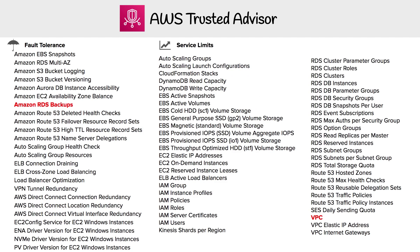Looking at the last two categories: fault tolerance and service limits. For fault tolerance, it would recommend something like RDS backups — just to make sure that you have backups in place so that if your database goes down, you can recover it. For service limits, there are limitations on the certain amount of resources you can use, but AWS allows you to increase those limits. A good example would be SES, which allows you to send out emails — by default it caps you at around 5,000 or 10,000 emails, and if you need to go beyond that, you would request a service limit increase. So those are all the checks and the five categories to give you an idea of what Trusted Advisor can help you with.